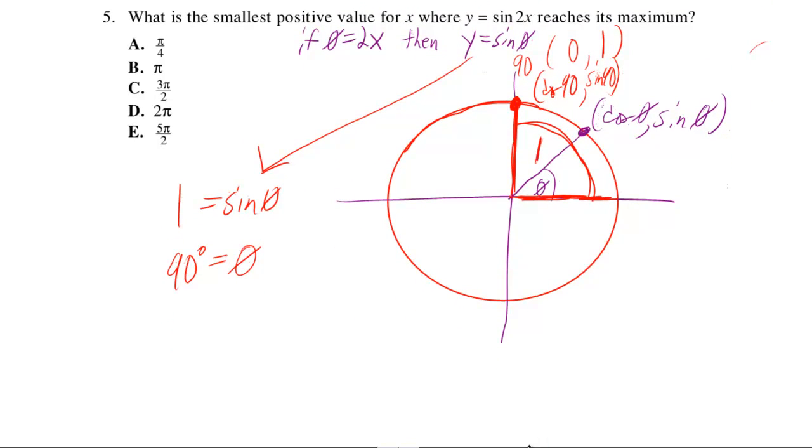So we've got to remember that we let theta equal 2x. Let's go ahead and replace theta back with 2x, so we know that 2x would have to equal 90 degrees. What would x have to equal? Well, let's divide both sides by 2. So x has to equal whatever 90 over 2 is, which is 45.